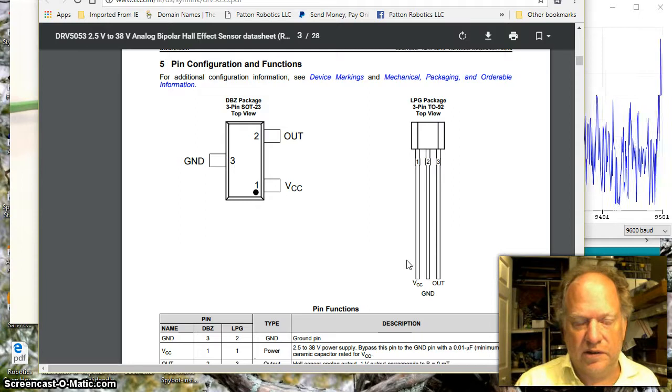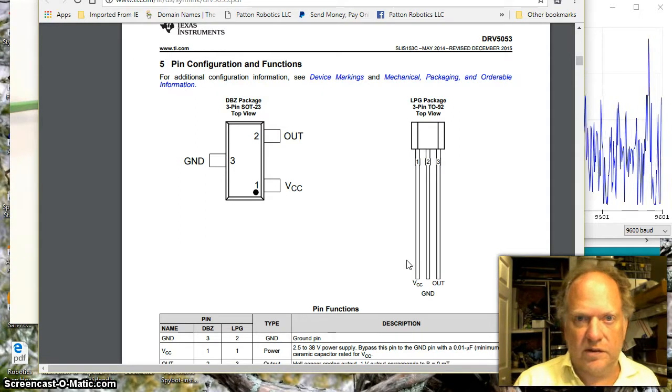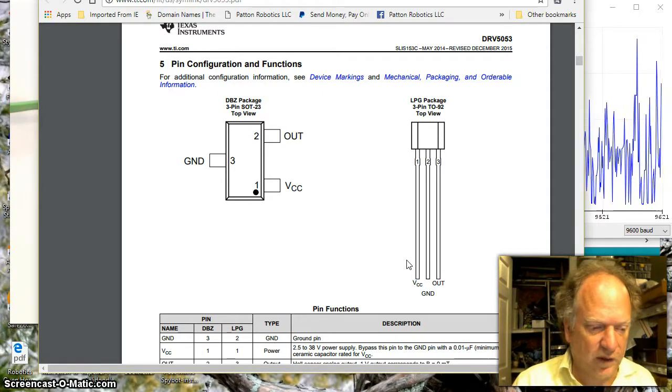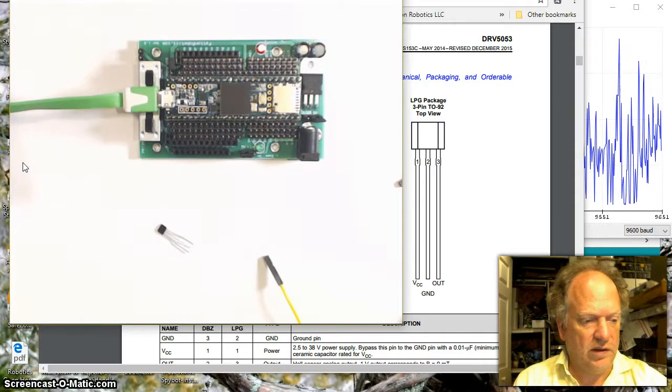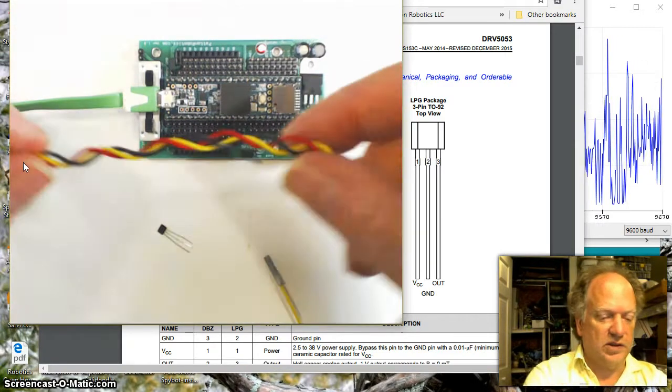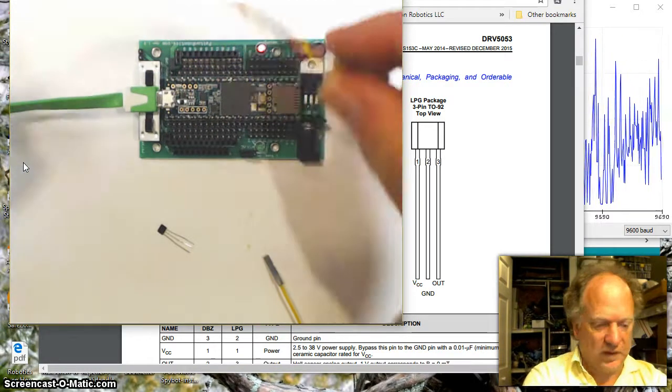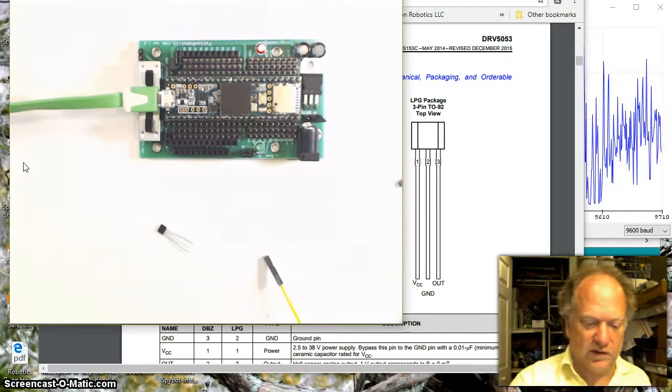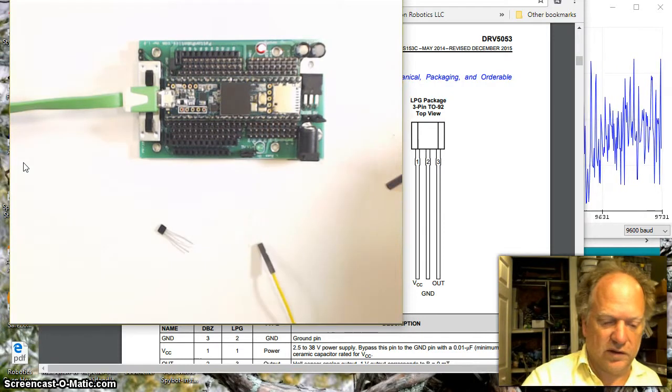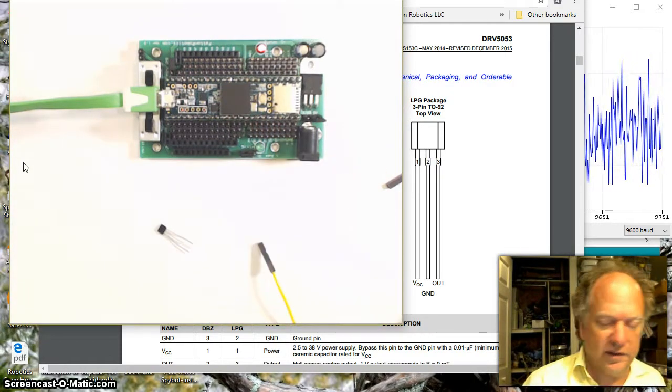So we can't use a standard, just straight three filament wire, like, for example, this one, which would be really handy. But, oh well, we actually have to use individual strands or somehow redo it.